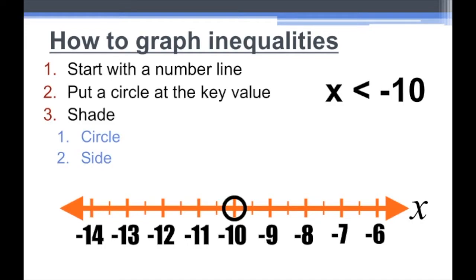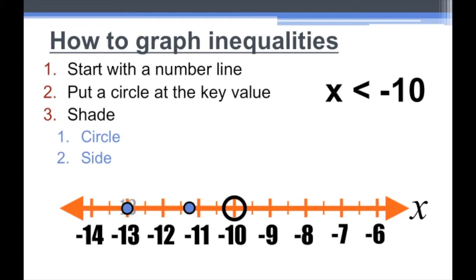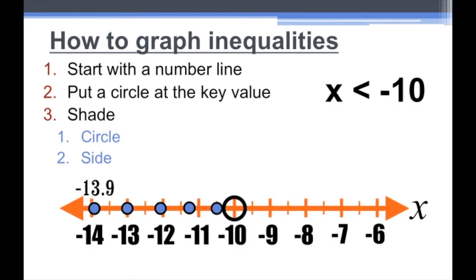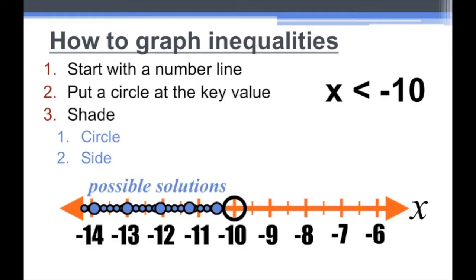Step three is to shade. We're saying x is less than negative ten, and there are so many possible solutions. If you name a number less than negative ten, you're right — it's a possible solution. Negative 11.25 is a possible solution, negative 13, negative 10.5, negative 12.1, negative 13.9 — every single decimal less than negative ten is a possible solution. We're not going to spend forever putting individual circles for each value, so there's an easier way.